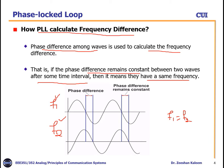If the phase difference remains constant between two waves after some time interval, it means they have the same frequency. For example, at a given instant we measure the phase difference between wave 1 and wave 2 — say there is a phase difference of 30 degrees. After some time interval, for example 5 or 10 seconds, we again measure their phase difference. If we have the same phase difference again, it means they are oscillating with the same frequency. If one wave has a higher frequency and the other a lower, their phase difference will change. So by measuring the phase difference, we calculate the exact frequency difference between the two waves. When the two wave frequencies are matched, we lock the system — that's why it's called phase-lock loop.